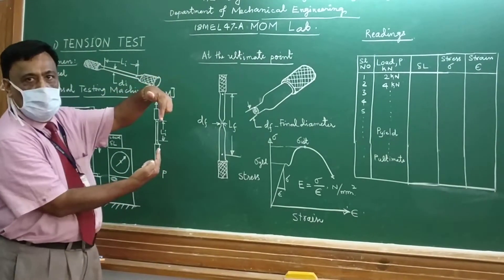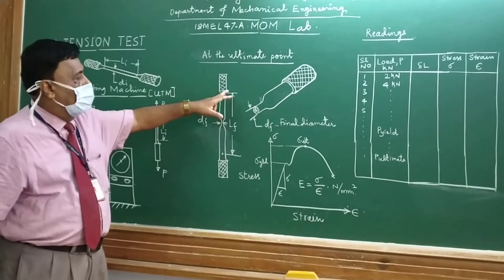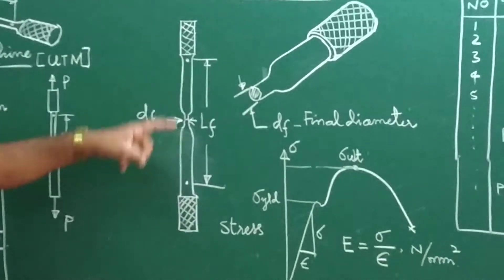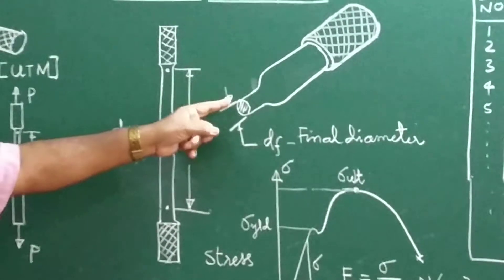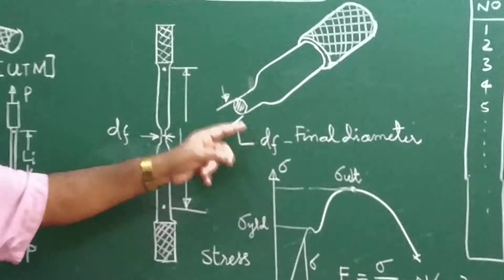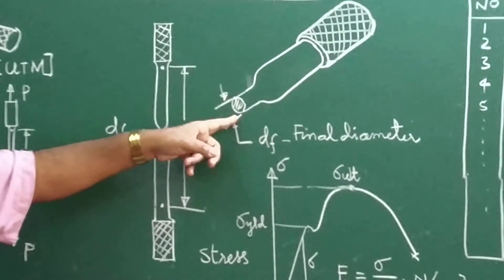After joining these two broken specimens, we have to note down the final length of the gauge points and measure the final diameter. You have to measure on the broken specimen.